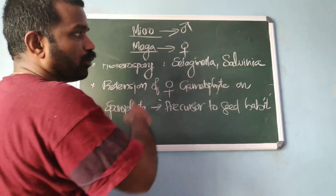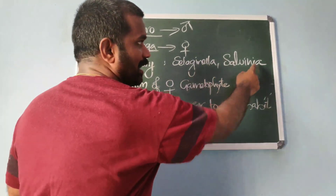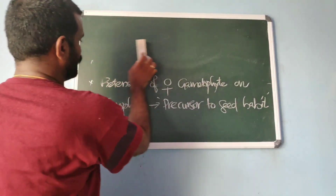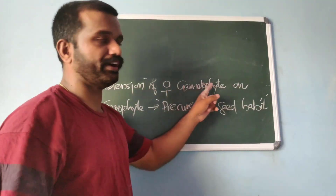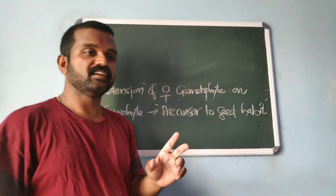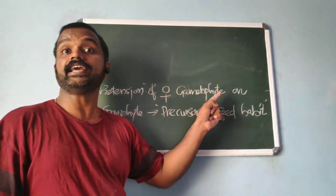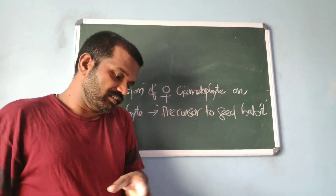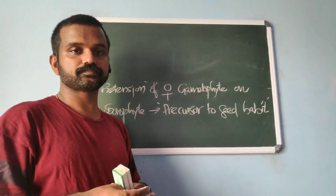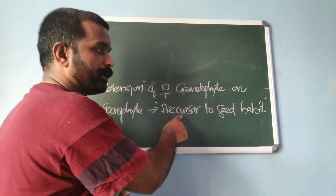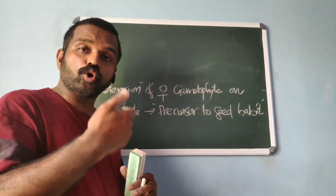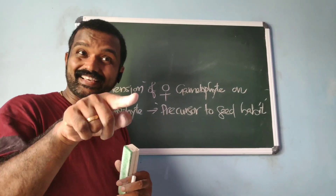Heterosporous pteridophytes include Selaginella and Salvinia. In these, the female gametophyte is retained on the main plant body, the sporophyte, where fertilization and development of the zygote takes place. This event is a precursor to seed habit, so the origin of seed habit can be traced in pteridophytes.